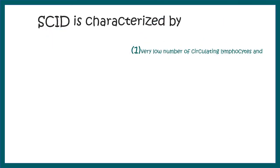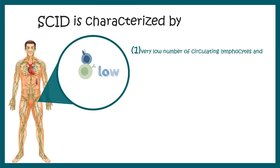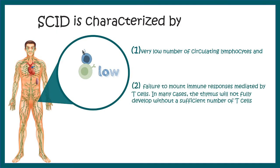AID has been found to be mutated or non-functional in SCID patients. To understand that SCID is occurring in a patient, indicators include: very low numbers of circulating lymphocytes, failure to mount an immune response by T cells, and in many cases the thymus would not even develop fully.